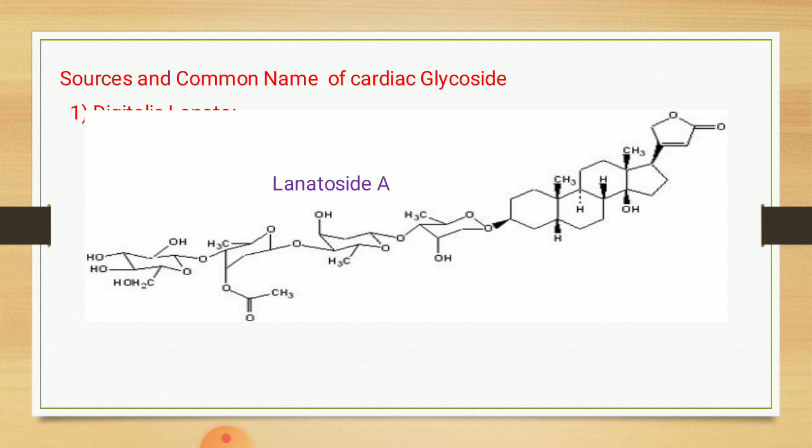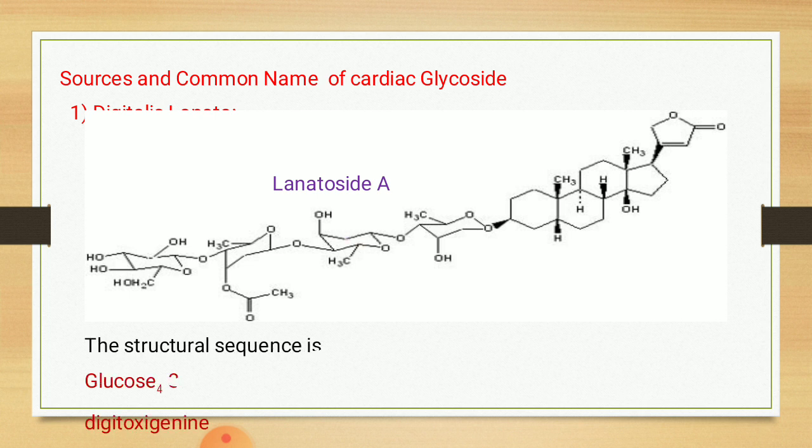The glycon part consists of three molecules of digitoxose and one terminal molecule of glucose. So in this structure, the aglycon part is digitoxigenin attached to the first digitoxose sugar, then a second digitoxose, then a third which is acetyl-digitoxose (meaning an acetyl group is attached to digitoxose), and finally the fourth or terminal sugar is glucose. So the sequence of lanatoside A is: digitoxigenin → digitoxose 1 → digitoxose 2 → acetyl-digitoxose 3 → glucose.